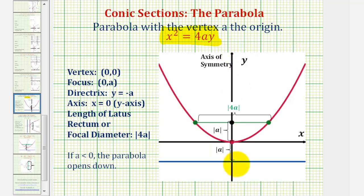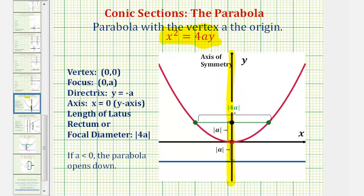So let's take a look at our sketch. If the equation fits this form, the axis of symmetry will always be the y-axis with the equation x equals zero. By determining the value of a in the equation, we can determine the distance from the vertex to the directrix, as well as from the vertex to the focus. It's equal to the absolute value of a, which helps us find the equation of the directrix and the coordinates of the focus.